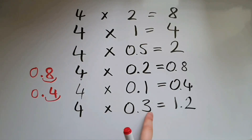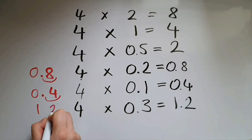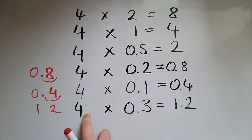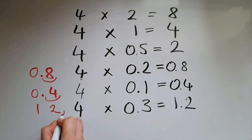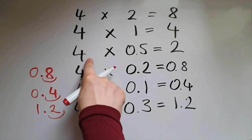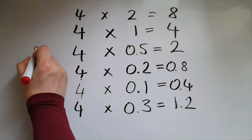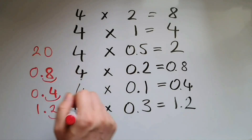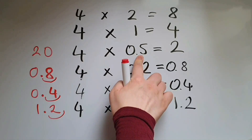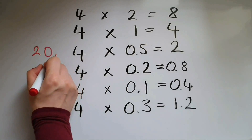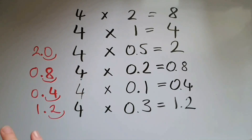Same thing here: 4 times 3 is 12, no decimal place here, one decimal place here, so 1 in total. I'm going to give the answer one decimal place, which gives me 1.2. And 4 times 5 is 20, zero decimal places here, one decimal place there, so that's 1 in total — giving me 2 as the answer.